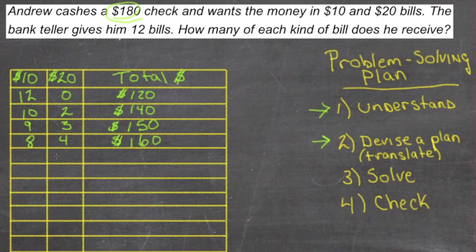So if that pattern holds, we could save time. We wouldn't have to keep going through more and more possibilities here. It should mean that we just need to go down two more on the 10s and up two more on the 20s to jump by $20 here on the total side. So let's try that.